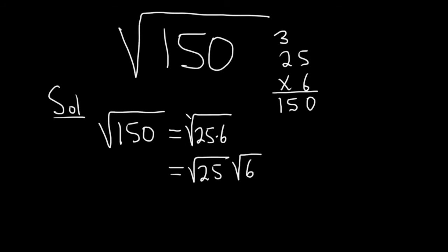And the square root of 25 is something we know, this is 5, so this is 5 square root 6. And so that would be the final answer.